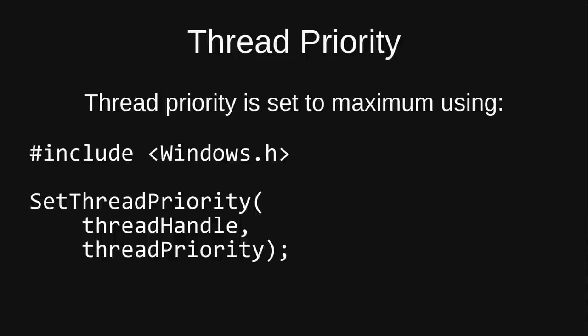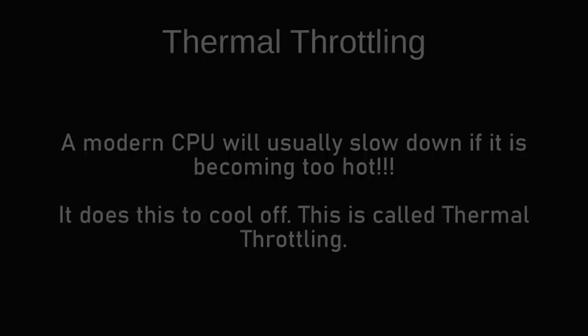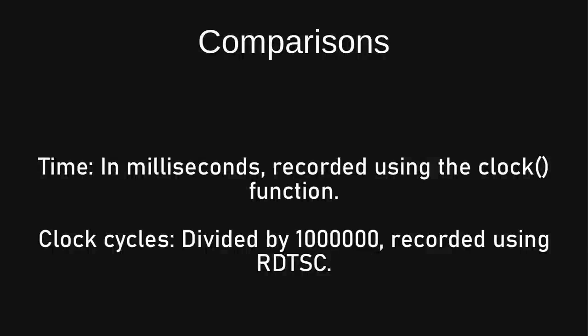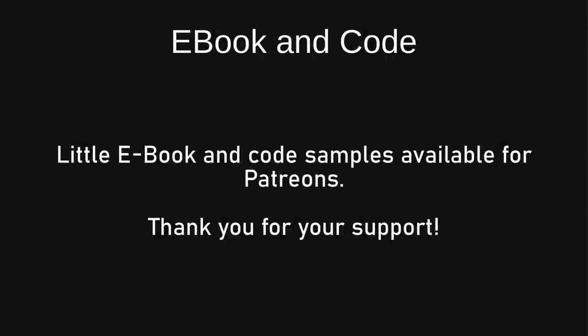For the tests I've set all thread priorities to maximum — that's priority 2 in Windows using the SetThreadPriority function. I've used the SetThreadAffinity function to force hyperthreads, or to force multicore without using hyperthreads. There's something called thermal throttling where the CPU will underclock itself when it gets too hot, so I've also recorded the clock cycle counts — you'll see those on the very right-hand side of the data. The loop count is actually a billion. I'll be putting up a write-up and the code for Patreons as a big thank you for the support.